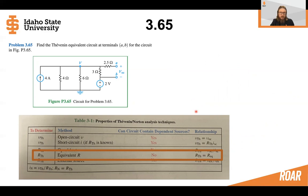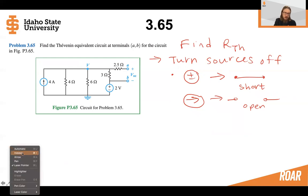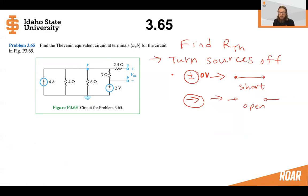To find the Thevenin resistance using the equivalent resistance method, we're going to turn the sources off. A voltage source turned off becomes 0 volts — something with 0 volts across it is just a wire, which is a short circuit. If we turn a current source off, it has 0 amps — something with 0 amps is an open circuit. So we get short circuits for the voltage sources and open circuits for the current sources.